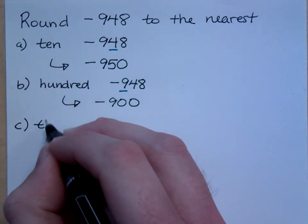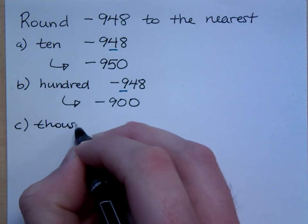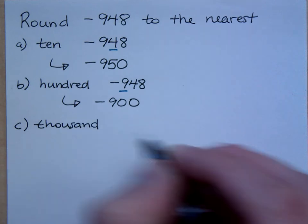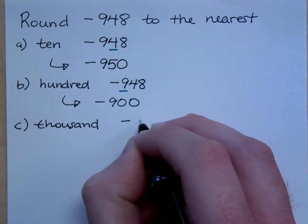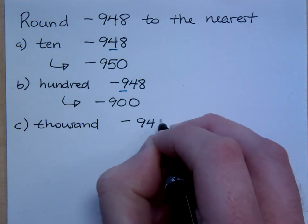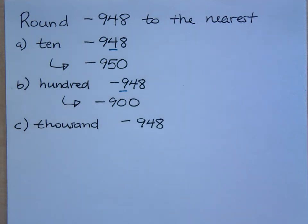And what if I round this to the nearest 1,000? So here's my number, negative 948. What number, or what digit do I have in the 1,000 spot? Tim says 0.